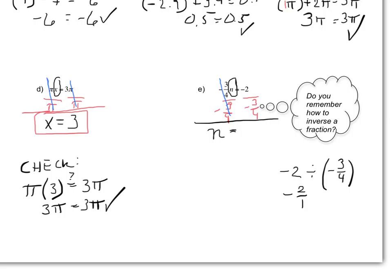When you divide fractions, take this problem and make it a multiplication problem. Leave the first number as negative 2 over 1, change division into multiplication, and flip the second fraction upside down — 3/4 becomes 4/3. We call this the reciprocal. Then multiply straight across numerators and denominators: negative 2 times negative 4 is positive 8, and 1 times 3 is 3. So negative 2 divided by negative 3/4 equals 8/3.